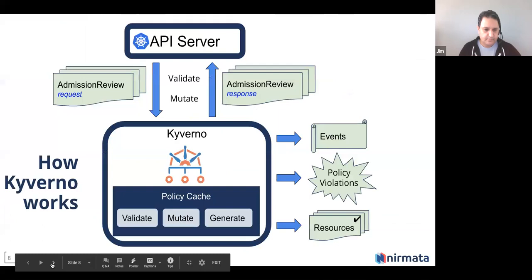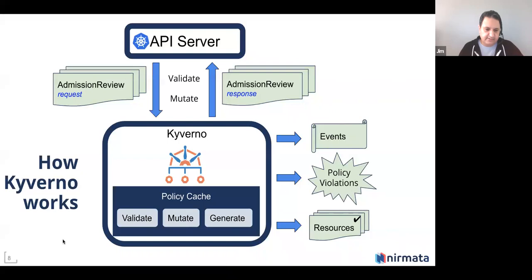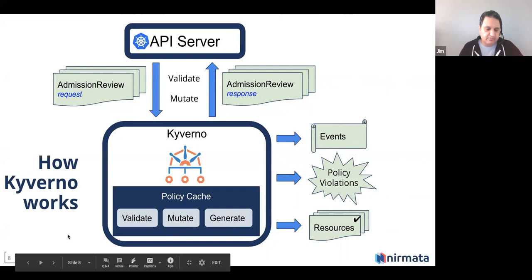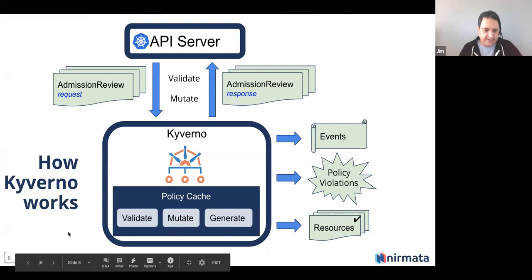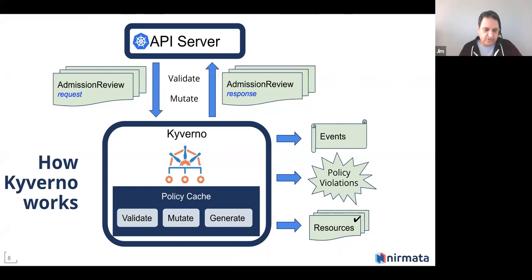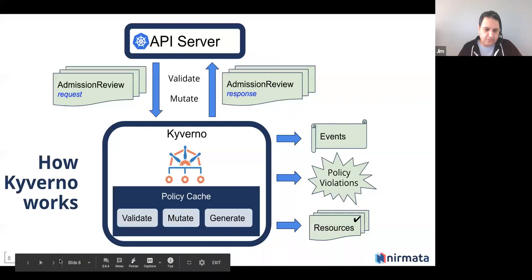Here's exactly how Kyverno works. It plugs in as a webhook receiver for any API server request and handles both validation as well as mutation webhooks. For each request, Kyverno gets an admission review request, and based on policies you configure, it's smart enough to optimize — it will only receive requests for the objects and data types you want to validate. Kyverno can validate, mutate, or even generate new configurations based on those policies and rules. Kyverno also does background scanning, so for existing workloads running before a new policy rule is introduced, Kyverno will scan them and generate policy violations.